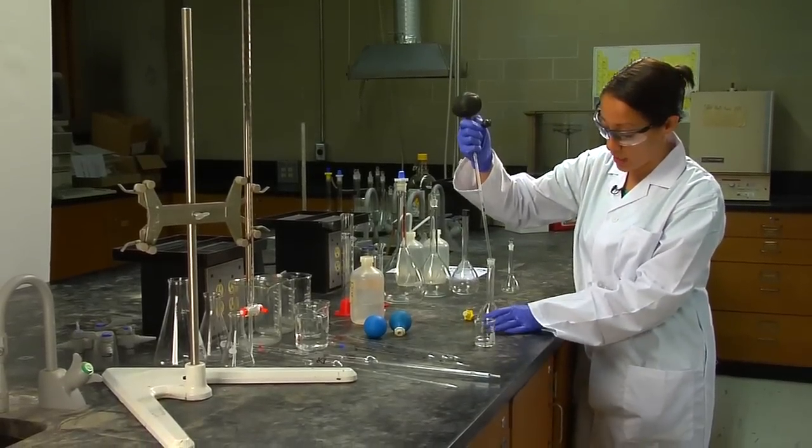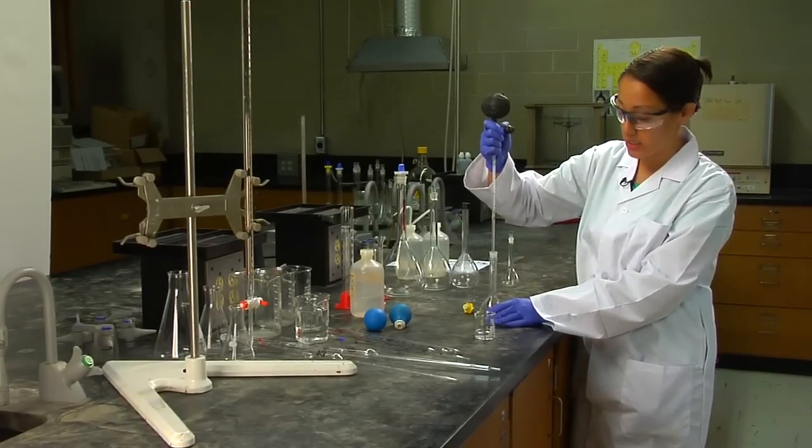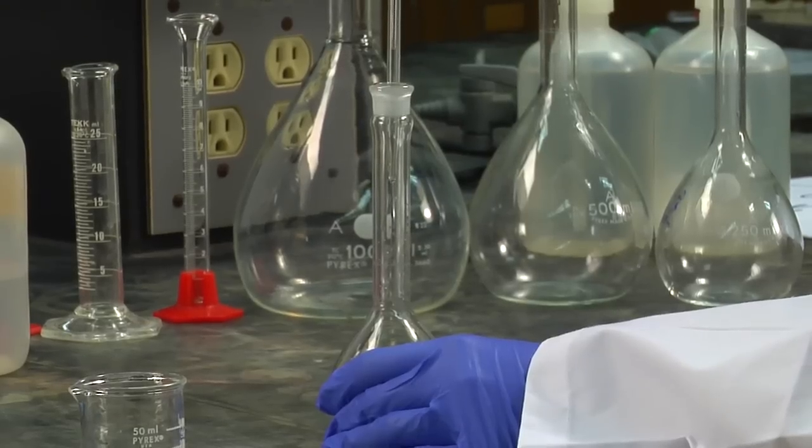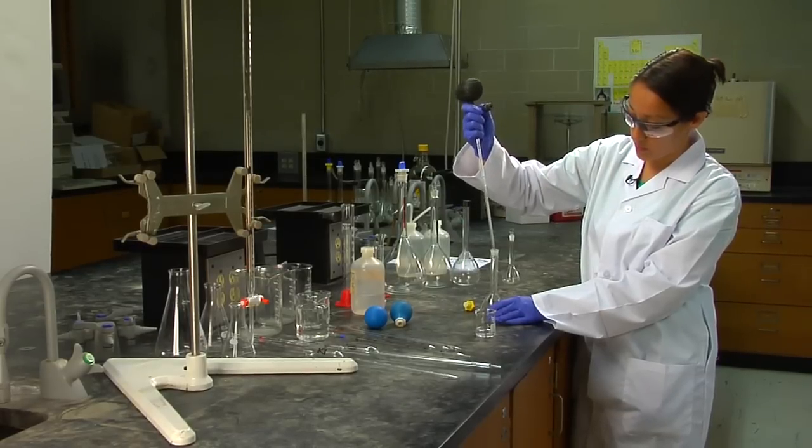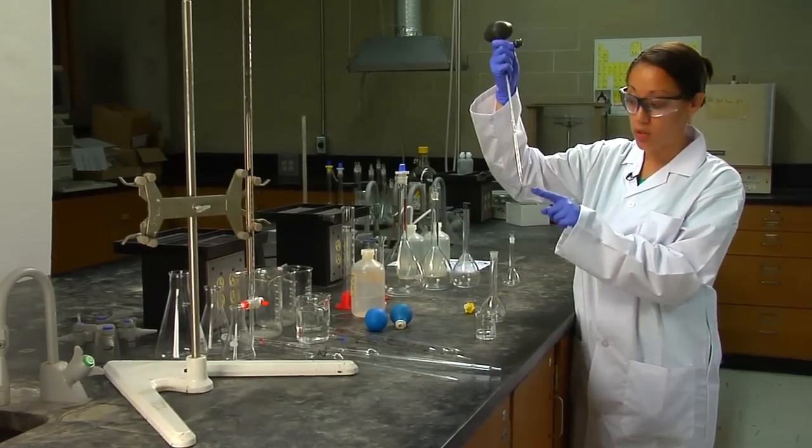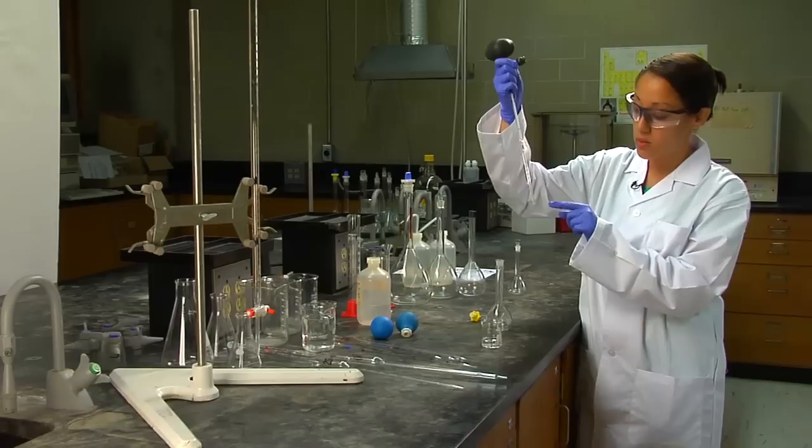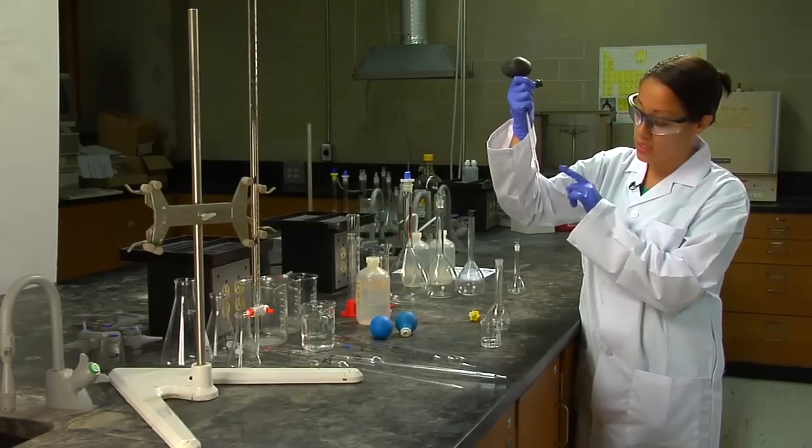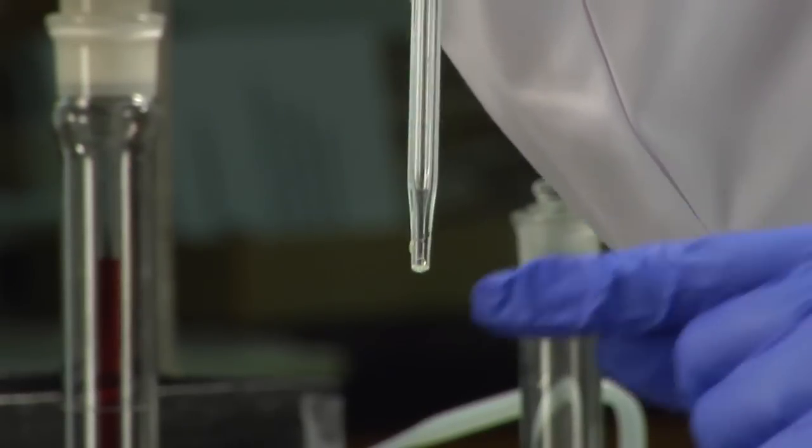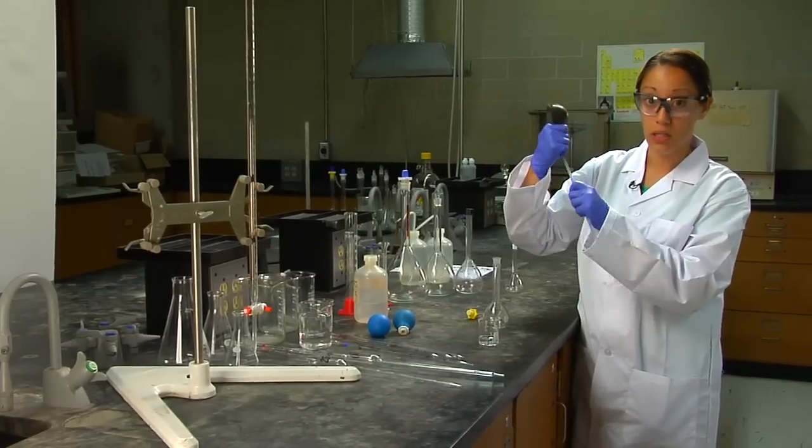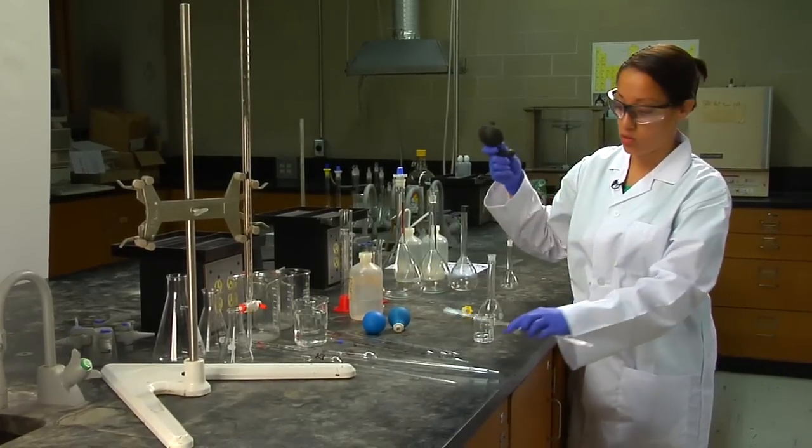Once you're happy with the volume that you've measured, you can simply empty it into your clean volumetric flask at any pace that you want. There's always going to be a little bit of volume left over in the tip. That's okay because this 2 mL accounts for that not going out. Make sure you don't blow this out or your volumes will be a little bit off, especially in terms of your standard solutions.